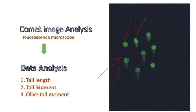And the third one is the olive tail moment, which is the migrated DNA percentage multiplied by the distance between the head and center of gravity of the DNA in the tail.